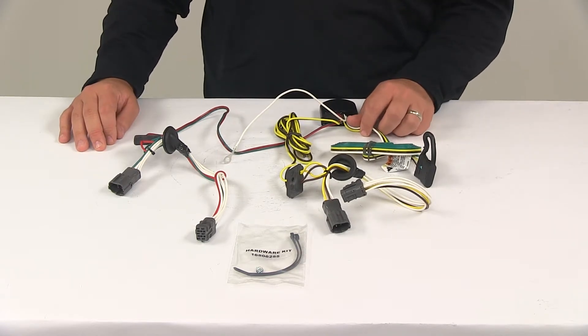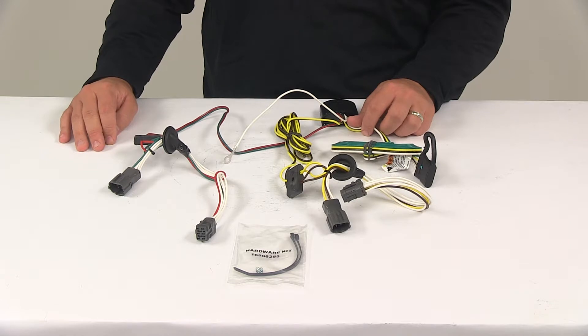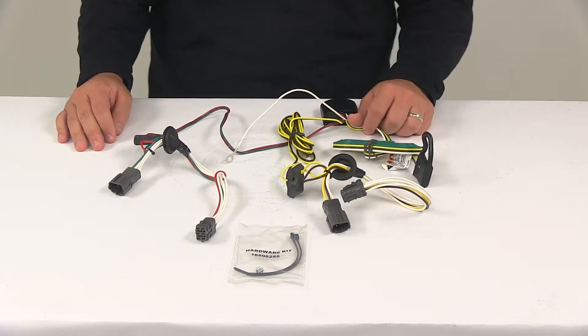When it comes to the maximum amperage for the stop-and-turn lights, we're looking at 2.1 amps per circuit. For the tail lights, we're looking at 5 amps per circuit.